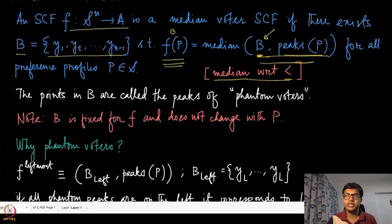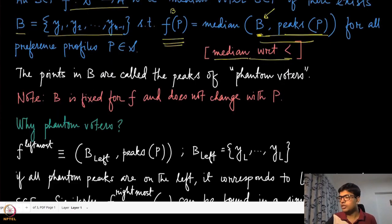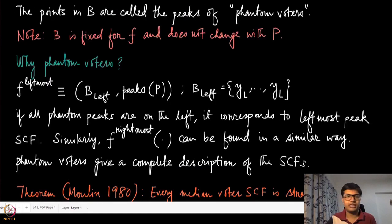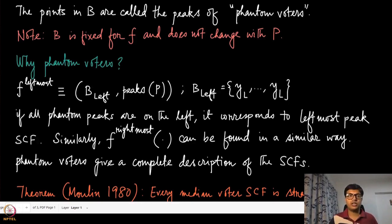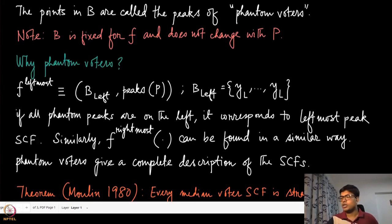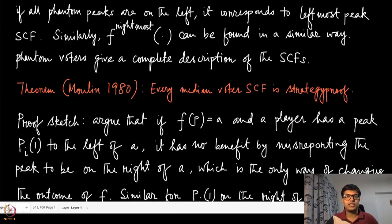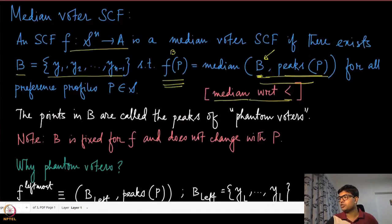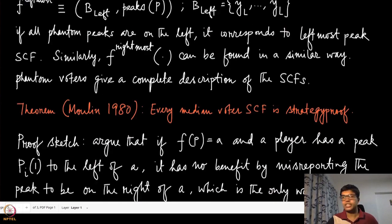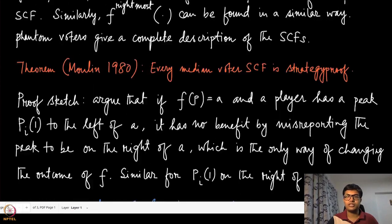In our examples we assume alternatives are located on a real line. The median is computed with respect to the common ordering of all these alternatives — the common ordering with respect to which single-peak preferences are defined. This is why we introduced phantom voters: so we can look at all these mechanisms collectively. It's a collection of social choice functions, and by adjusting the phantom peaks appropriately you can output different kinds of medians as the final outcome.